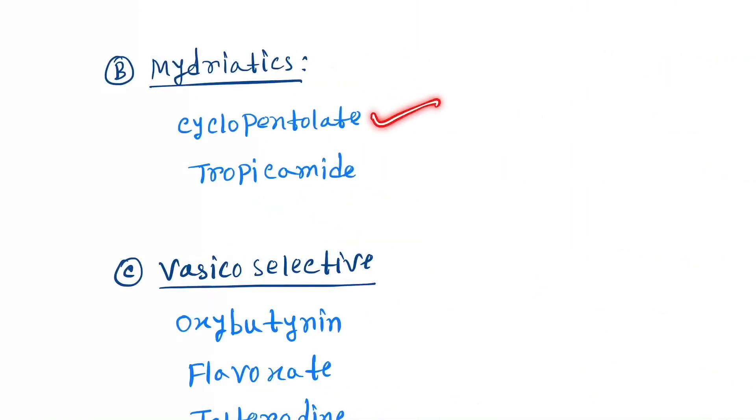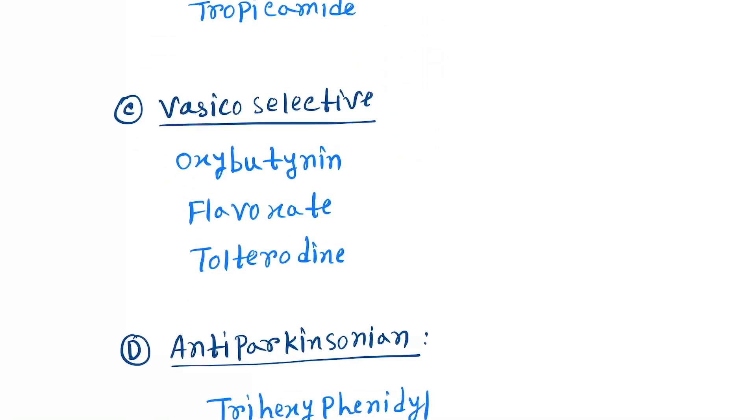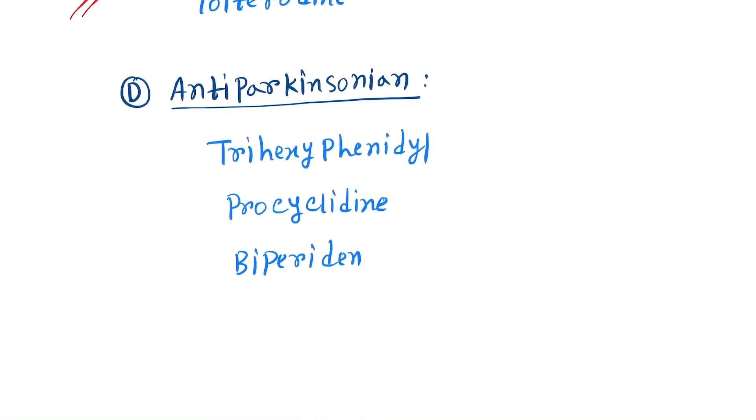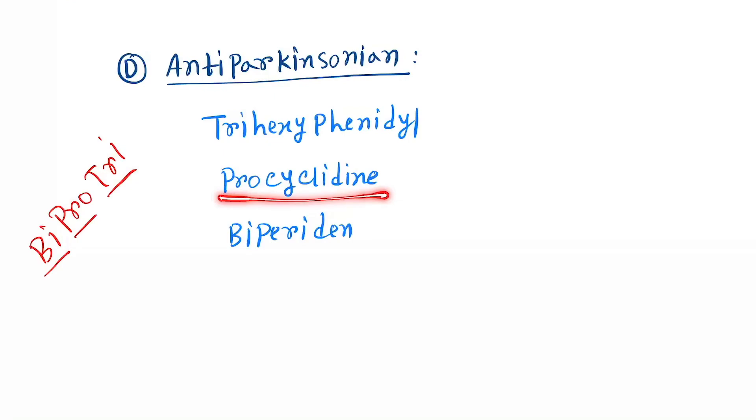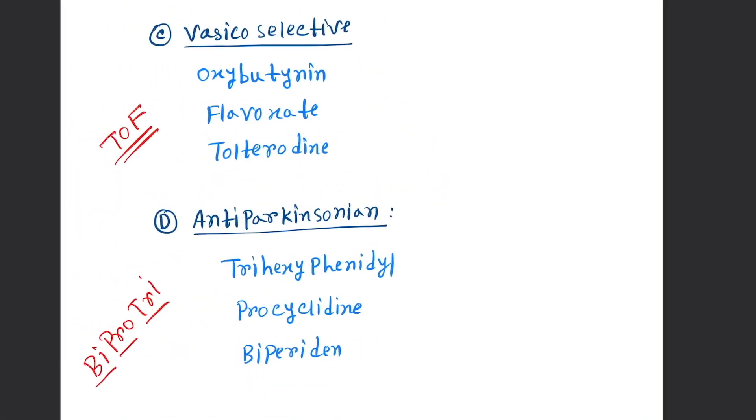Next mydriatics: cyclopentolate and tropicamide. Now vasico-selective: oxybutynin, flavoxate, tolterodine. Antiparkinsonism: trihexyphenidyl.